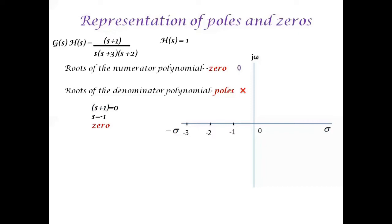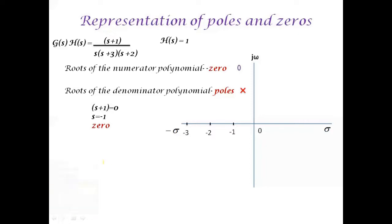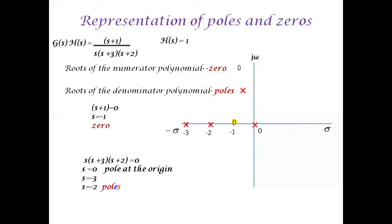If I equate the roots of the numerator polynomial to zero, s+1=0, hence s=−1. So I have one zero at s=−1, which appears on the negative real axis of the s-plane, where s=σ+jω represents the complex frequency variable. Let me plot the zero in the s-plane. Equating the denominator s·(s+3)·(s+2)=0, we get poles at s=0 (one pole at the origin), s=−3, and s=−2, giving three poles total on the negative real axis.